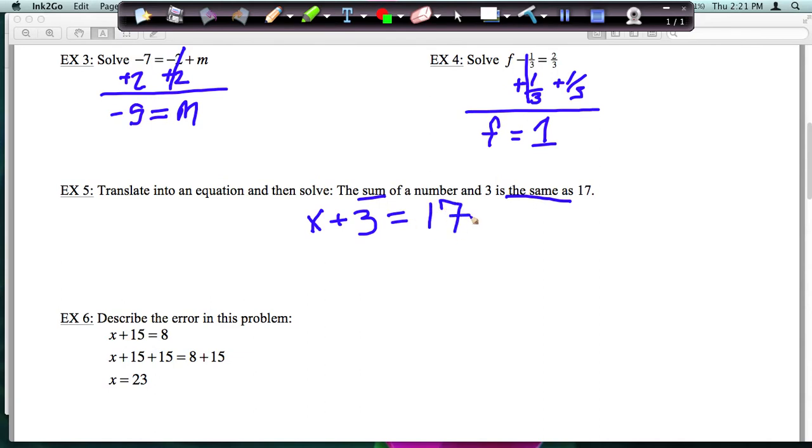Is the same as means equals 17. So that's our equation, and now we want to solve for x. So we're going to get the term next to x, which is a positive 3, and let's subtract 3 from both sides. These cancel. Bring down the x. Bring down the equal sign. 17 minus 3 is 14. So x is 14.